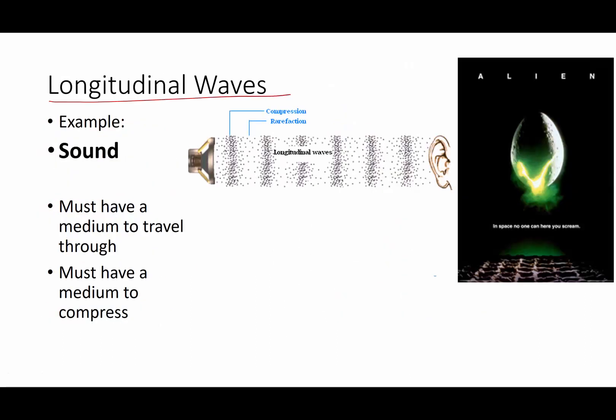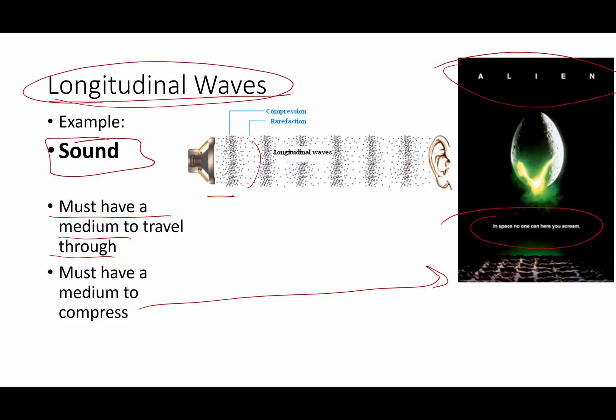Now, when you have a longitudinal or a compression wave, it must have a medium to compress. So sound waves cannot go through a vacuum. It has to have a material that it can squish together and then have an area where there is a low pressure and then an area of high pressure. And this leads to the old movie poster for the movie Alien, that is a 40-year-old movie now or 50 years old. It's been around a while. And the old tagline for that movie that says, In outer space, no one can hear you scream. And it's due to the fact that you cannot have sound in a vacuum. And it's due to the fact that a sound wave or any longitudinal wave must have a medium in order to compress.